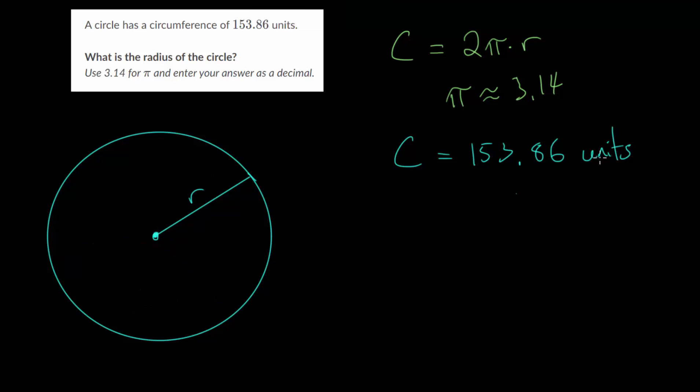Plugging this into our formula, we can solve this equation. We have 153.86 equals 2 multiplied by 3.14 multiplied by R. We can simplify this: twice pi, or twice 3.14, is 6.28.